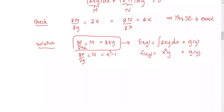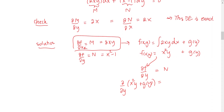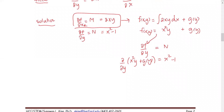In the next step, we are going to find the partial derivative of this obtained solution with respect to y and then equate it with the N expression. So the partial derivative with respect to y of x squared times y plus g(y) equals N. From the problem, N is x squared minus 1. The partial of x squared y with respect to y gives us x squared, and the partial of g(y) with respect to y is g'(y), so x squared plus g'(y) equals x squared minus 1.